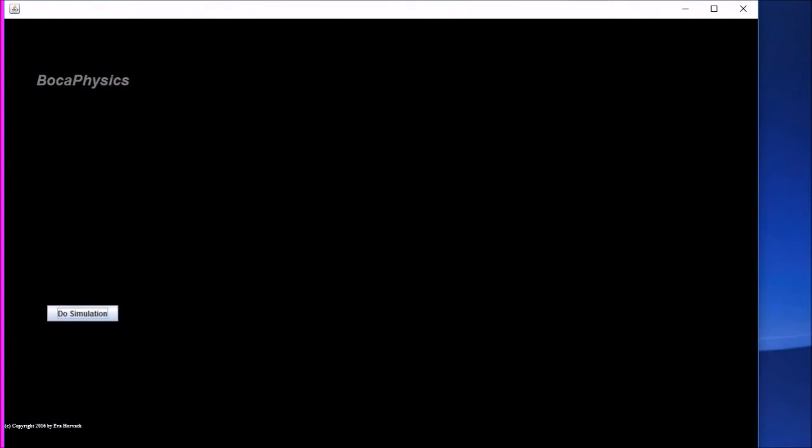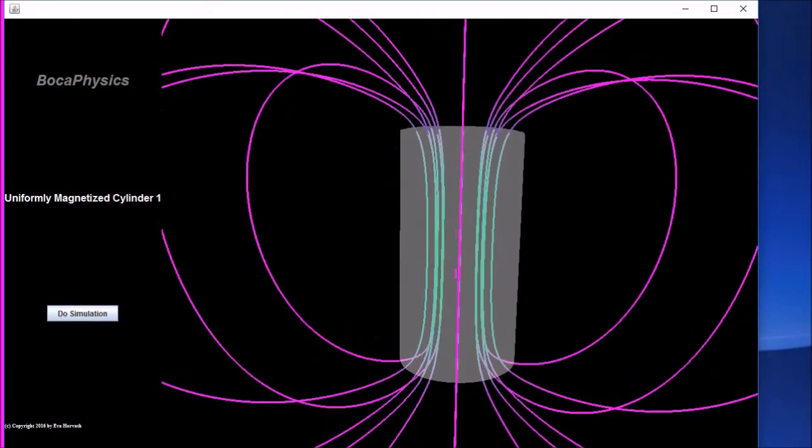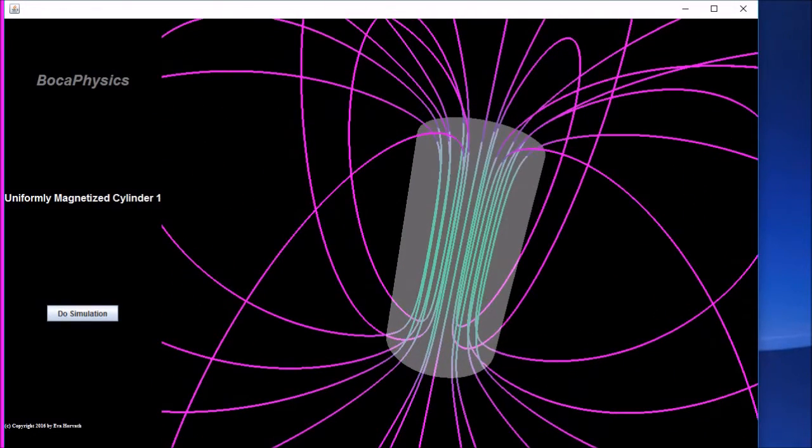Let's next treat the case of a cylinder of finite length with uniform magnetization in the z direction. Although this is a graduate level problem, it's instructive to consider the qualitative behavior of the magnetic field. Because the magnetization is uniform, there is only a bound surface current density, the current flows around the cylinder in a circumferential direction, and no current flows on the ends of the cylinder.